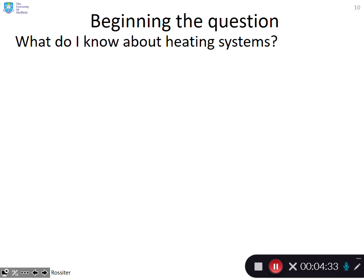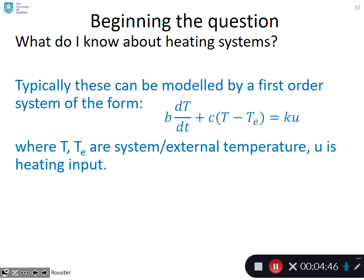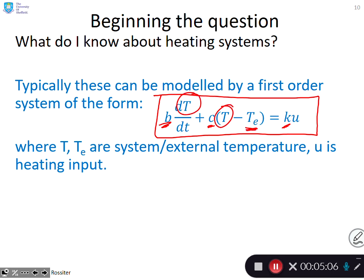Beginning the question, the first thing I've got to do is say what do I know about heating systems. Typically you can model a heating system with a first-order model of this form: it's got unknown coefficients B, C, and K, temperature T, external temperature TE, and heating input U. This is what I would expect students to know - base knowledge, pass-fail knowledge.